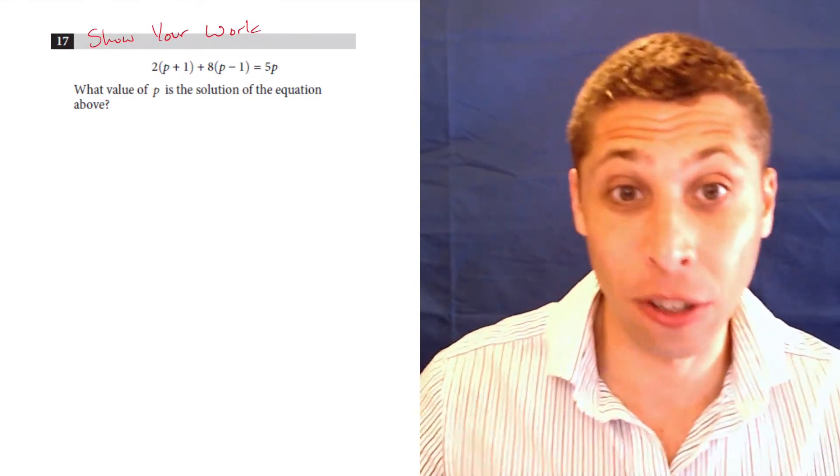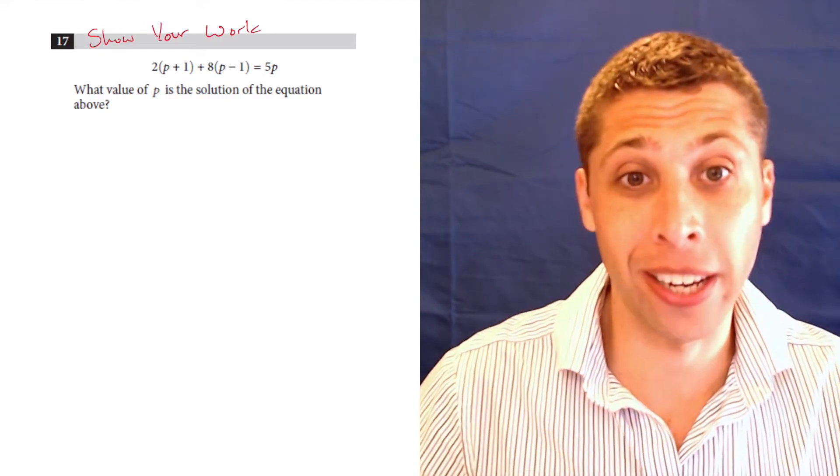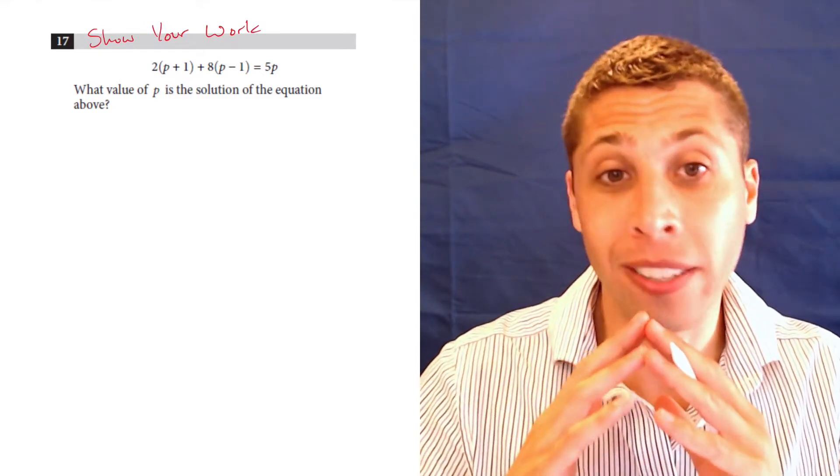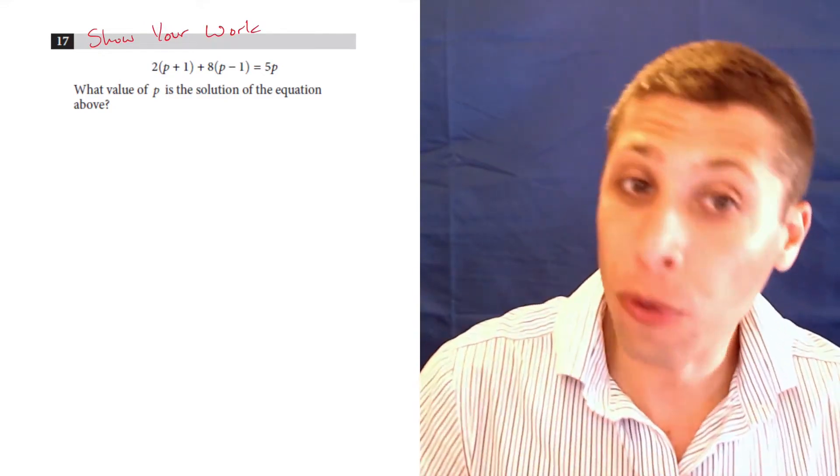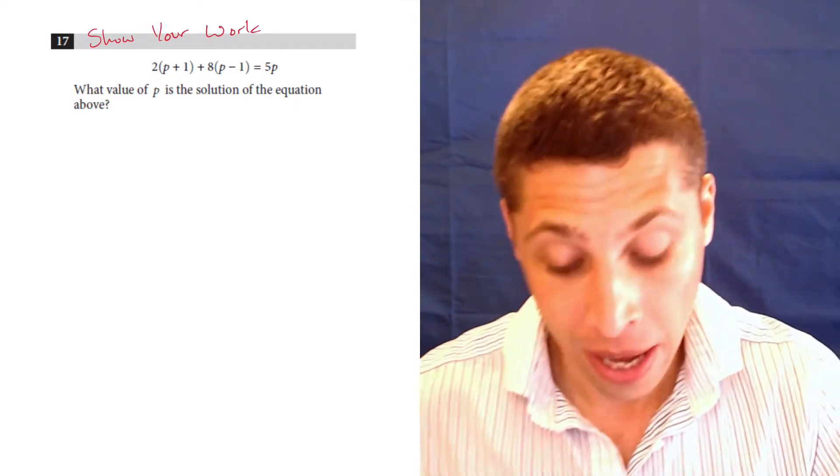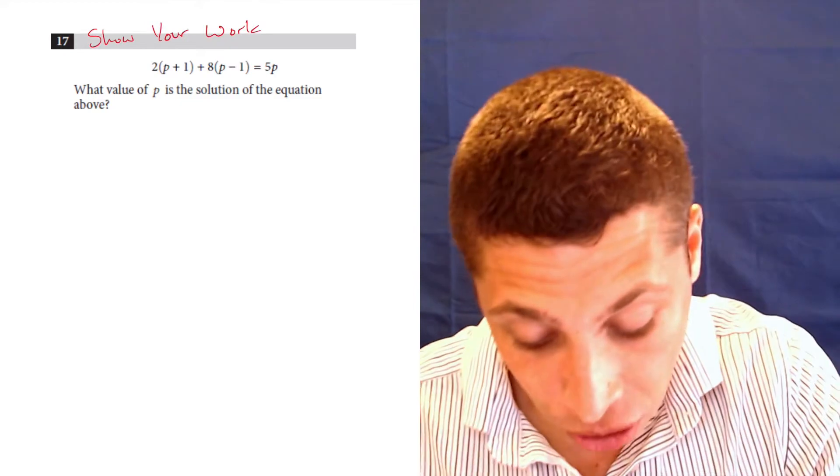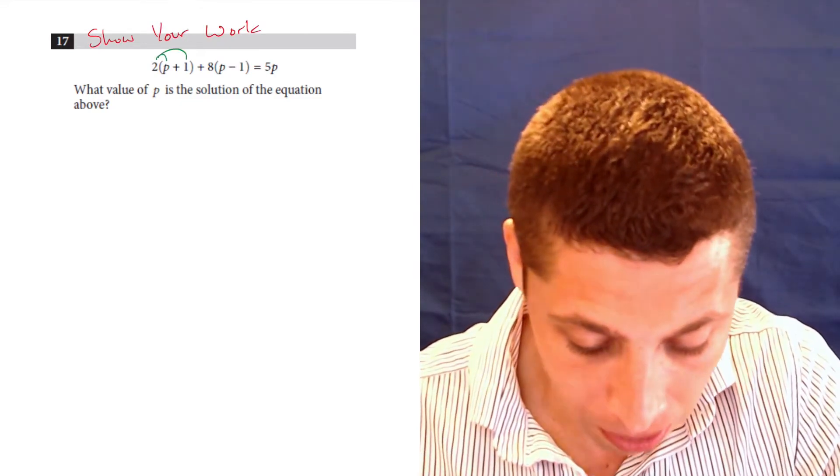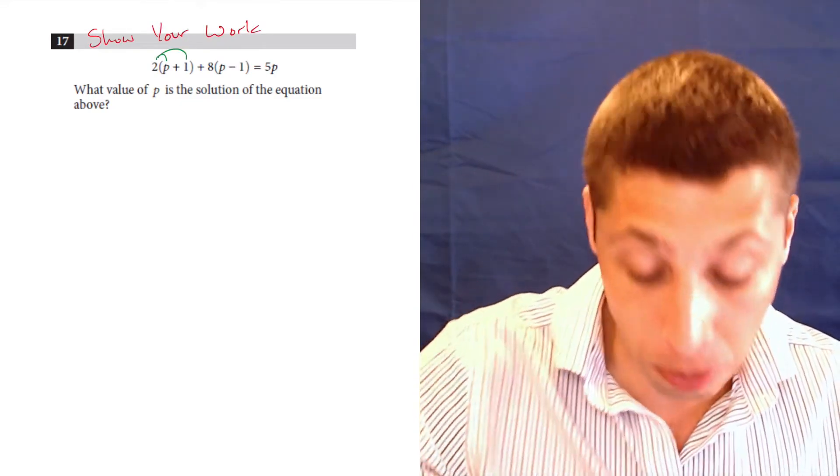Those parentheses mean I'm going to need to distribute. Distribution is very dangerous. We move too fast, we forget to distribute, we lose a negative, something bad happens. My way of preventing that is when I distribute, just draw the little lines, right, so just make sure you distribute to both parts.